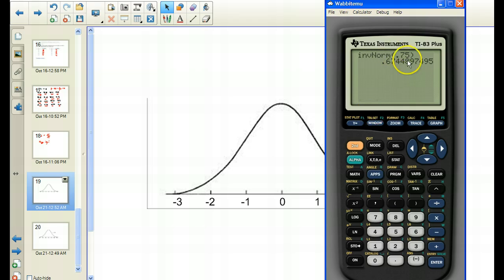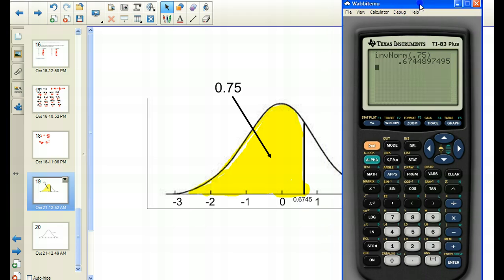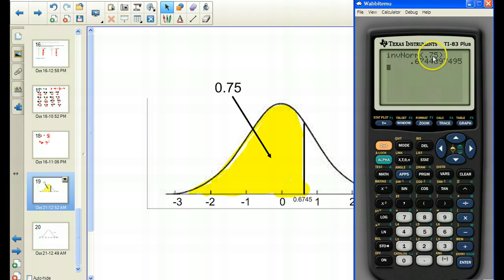Now, what inverse normal will do is it will take in an area to the left of a z-score and it will return the z-score that has that area to the left of it. So the z-score that has an area to the left of it of .75 is .6745, right here, which is a little bit between 0 and 1, a little further to 1 than 0. So that's what inverse normal does, area to the left of the number, and return the z-score that has that area to the left of that number.